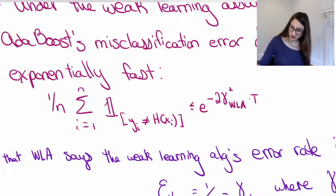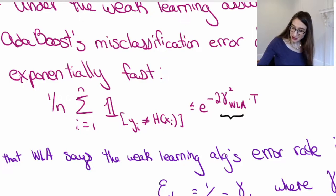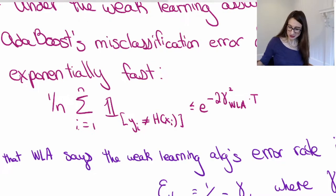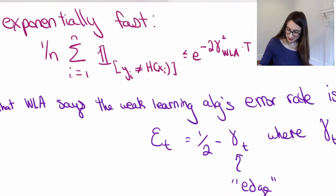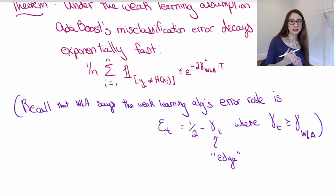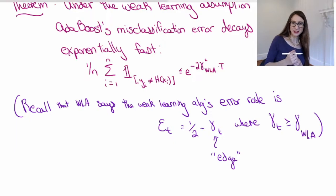And then this γ_WLA is strictly greater than zero, and it is a result of the weak learning assumption. In particular, the weak learning assumption says that the error rate of the weak learning algorithm is always a little bit less than one-half.